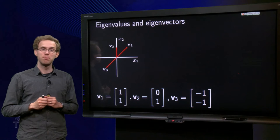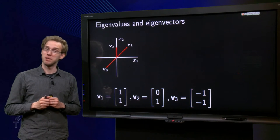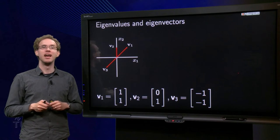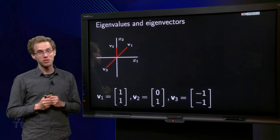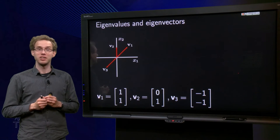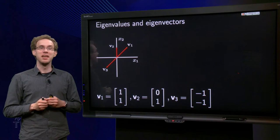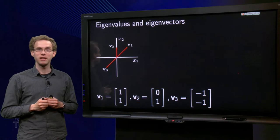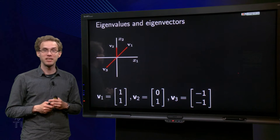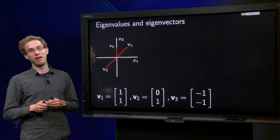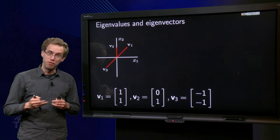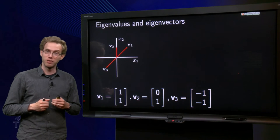If you want to compute the principal axis of a body in a mechanics problem, you need to compute the eigenvalues and eigenvectors of a matrix. If you want to solve a coupled set of linear differential equations in electrical engineering, or a discrete linear population model, you again need eigenvalues and eigenvectors. In many fields and many applied problems, you eventually need to compute the eigenvalues and eigenvectors of a matrix.